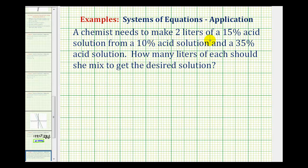A chemist needs to make two liters of a 15% acid solution from a 10% acid solution and a 35% acid solution. So we're mixing the 10% and 35% solutions to create two liters of 15% solution. We want to know how many liters of each should she mix to get the desired solution.